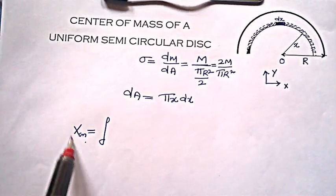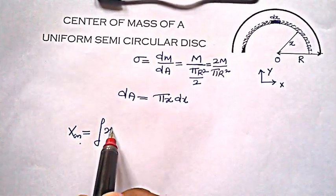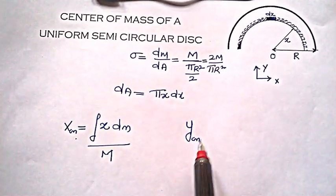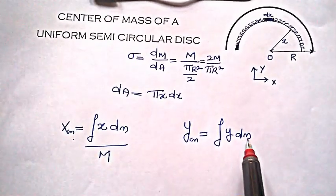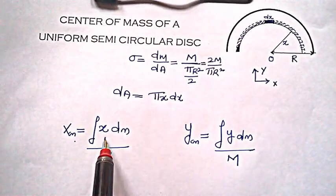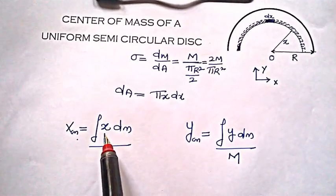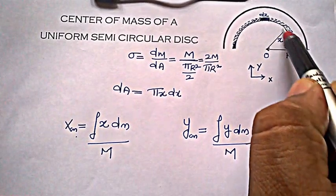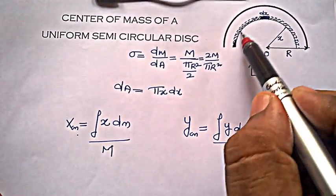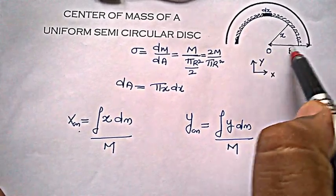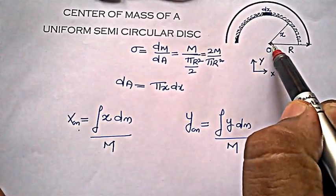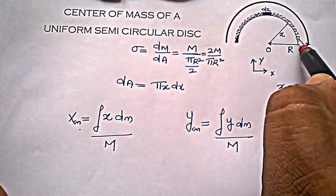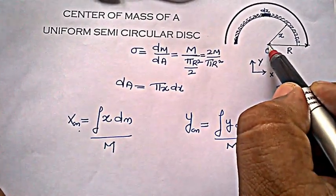So let's find out the coordinates of center of mass along x and y. By definition, xcm = ∫x dm / total mass, and ycm = ∫y dm / total mass. Now x and y here are the center of mass coordinates of this semicircular ring element. We know that for a semicircular ring there is no displacement along the x axis, so the x coordinate of center of mass of a semicircular ring is 0.